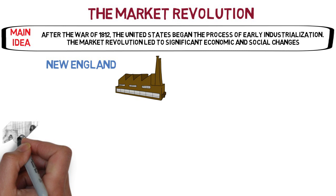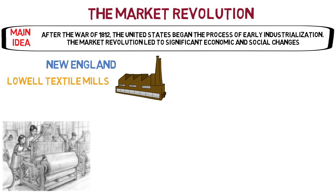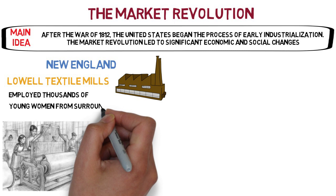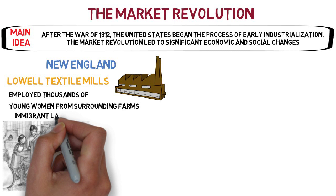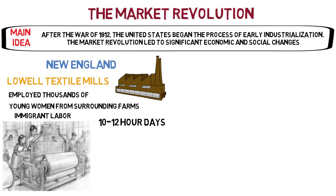The Market Revolution began when American entrepreneur Francis Cabot Lowell began to open a series of textile mills in Massachusetts starting in 1814. Lowell built his mills after visiting textile factories in Great Britain. Using the British system of manufacturing as a model, Lowell introduced mass production of cotton cloth to the United States. Lowell's factories employed thousands of young women from the surrounding countryside and later a growing number of immigrants coming from Europe.